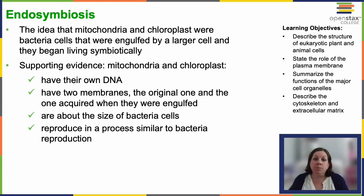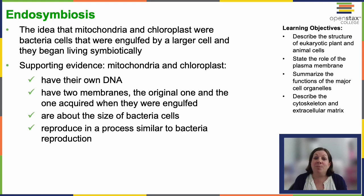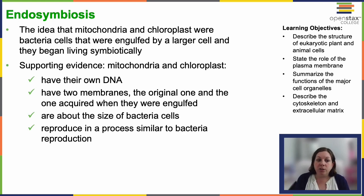Over time, these intracellular guests evolved to become permanent symbiotic partners, providing energy through oxidative phosphorylation, and eventually completely changing the energetic landscape for eukaryotic cells. We know the endosymbiotic relationship with mitochondria happened first because all eukaryotic cells — animal and plant — have mitochondria. A couple of odd exceptions exist, but research shows they didn't lack mitochondria originally; they had one that was lost over time as they found other ways to produce energy.